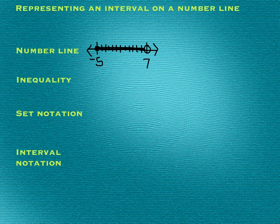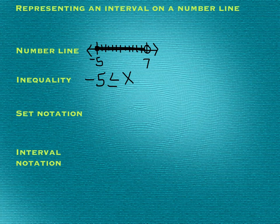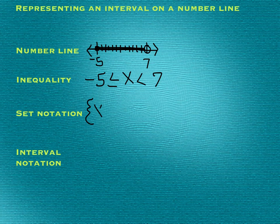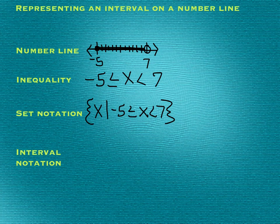We've talked about this — if I had this representation here with a negative 5, I've got a closed circle on my negative 5, and I have a 7 with an open circle, and everything shaded in between. The inequality that would correspond to that would be negative 5 is less than or equal to x, less than 7. Set notation is this fancy looking notation — it's got a brace, then the variable x, then there's a bar, and that bar means 'given.' Then you just put your inequality: negative 5 is less than or equal to x is less than 7. So it reads: x given, negative 5 is less than or equal to x is less than 7.